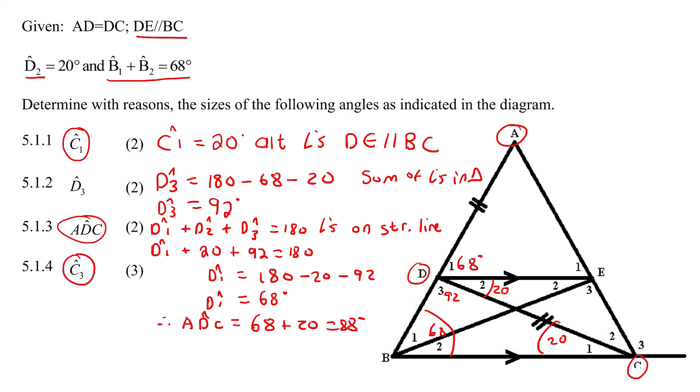The last question says, calculate the angle C3. So C3 is over here, and it's for three marks. Remember earlier they told us that these two lengths are the same, which is this one and that one. When two lengths of a triangle - so it would be this triangle over there - when two lengths are the same, two angles are the same.